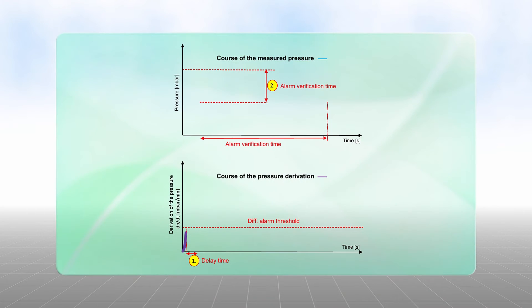Because the rush of air quickly disappears, the measured pressure decreases so that the alarm verification time expires without incident. No fire alarm is triggered.